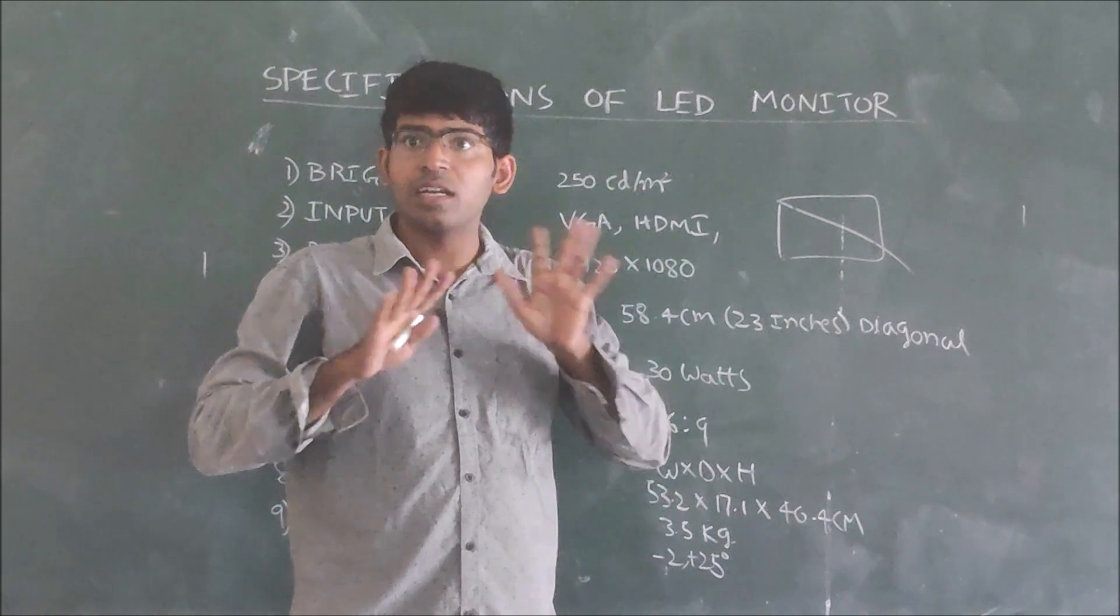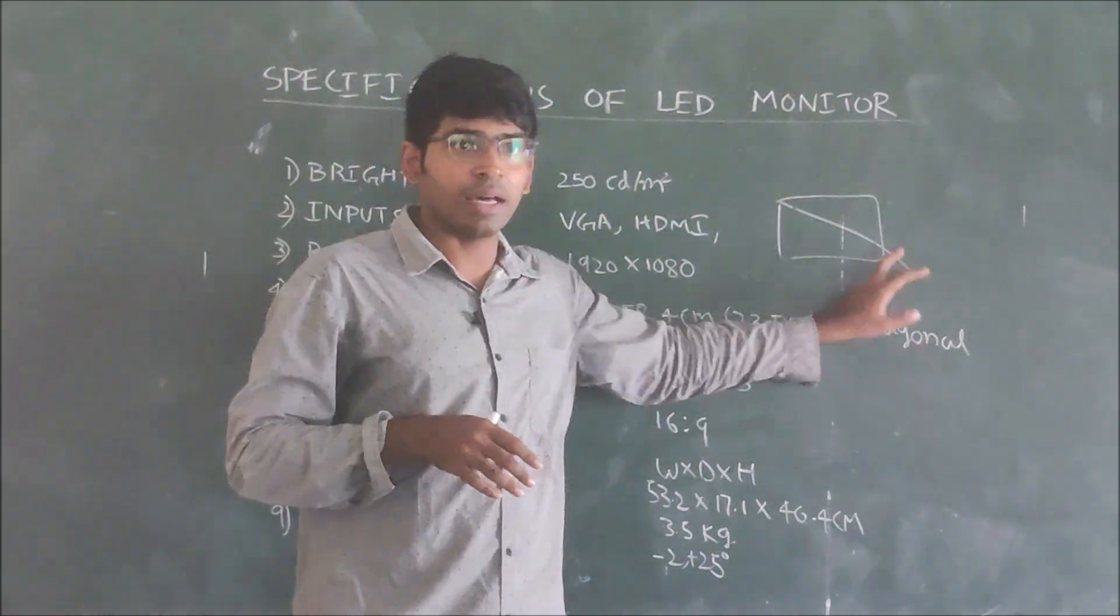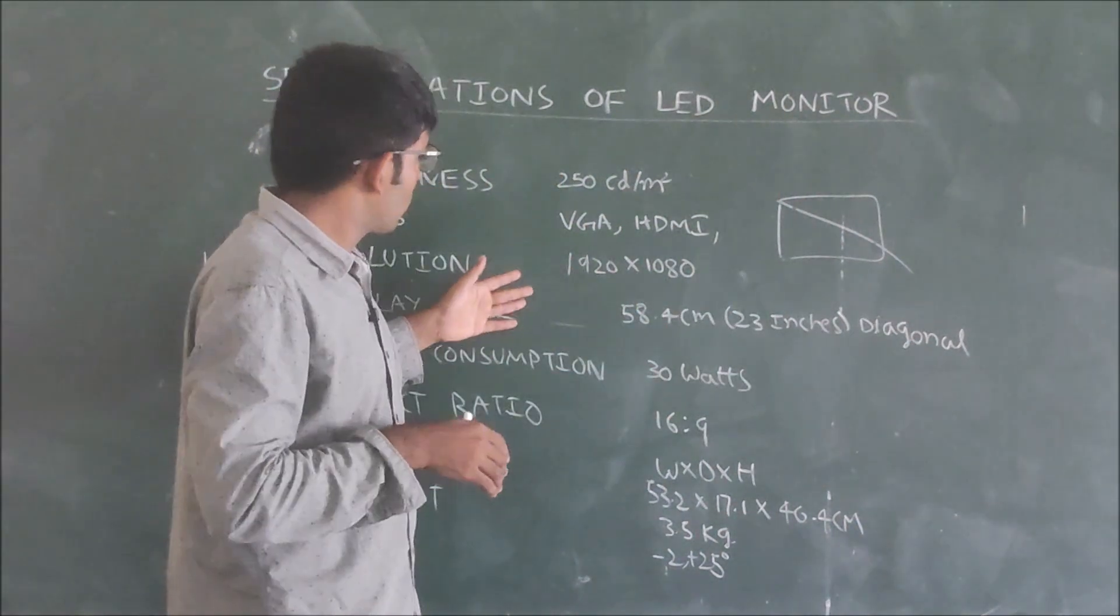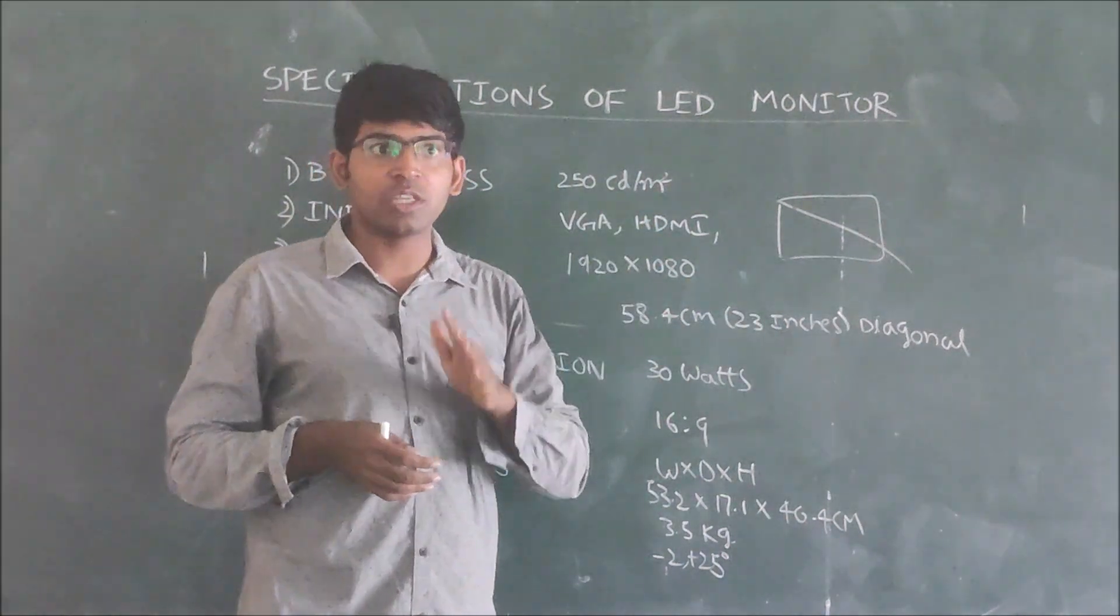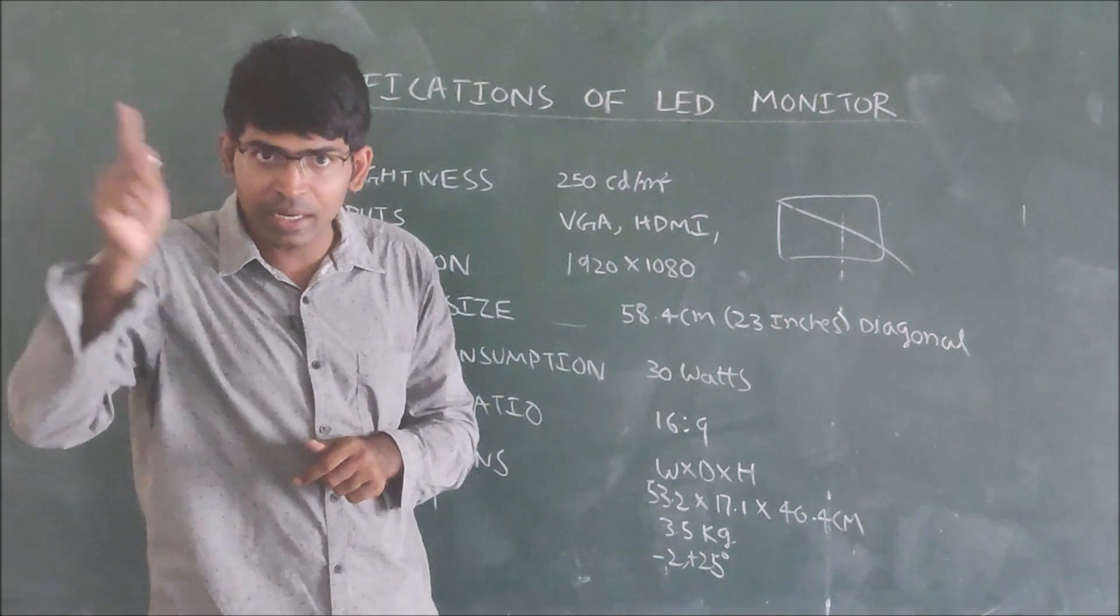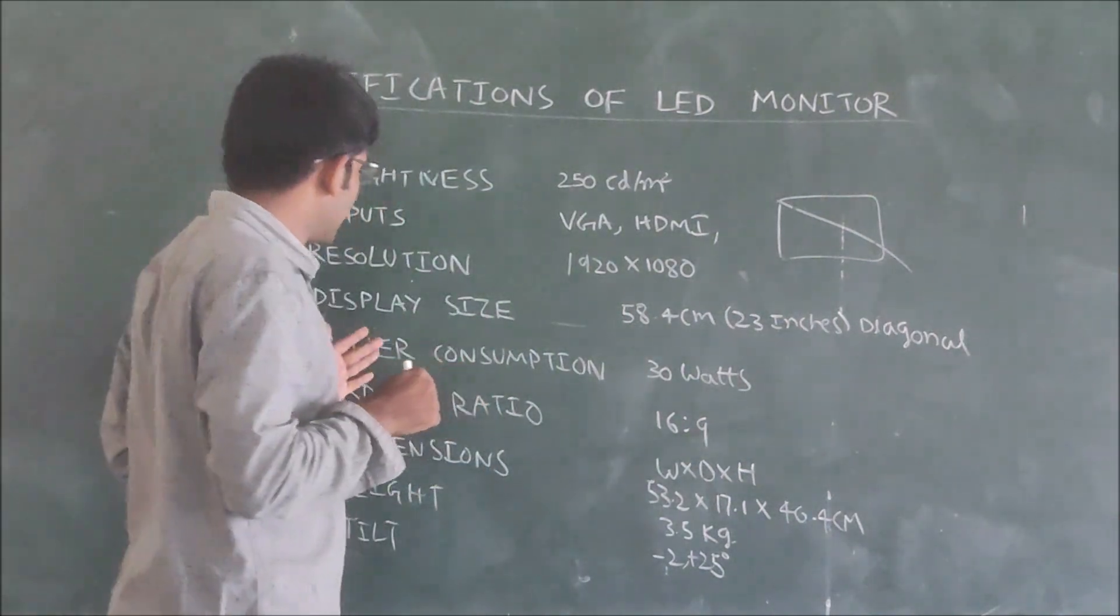When they are saying 23 inches, this does not mean this length or width or height. Only it means diagonal. So when I am saying 23 inches LED monitor, it is having 58.4 cm LED monitor - diagonal only I am measuring.